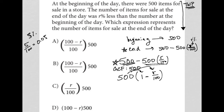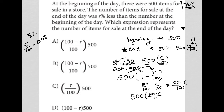Looking back at my answer choices, I still don't see that form exactly. Choices A, B, and C have fractions — a single combined fraction, not a separation. So I'll ask: what happens if I combine 1 minus R over 100 into a single fraction? I need a common denominator, so I make 1 into 100 over 100. That lets me combine the numerator to 100 minus R over the single denominator 100. My expression becomes 500 times (100 minus R) all over 100.